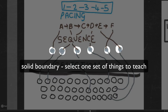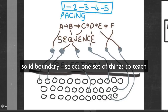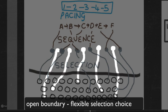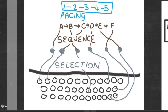In terms of selection, you can have a situation where you only choose one thing to teach — a very determined set where the boundary is solid. Or as a teacher you could be far more open about what you're going to select — it could be a negotiation with the students, with the time of day, etc. Once you've made the selection clear, either open or solid, you then have to take that selection and sequence it in a certain way.